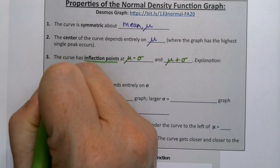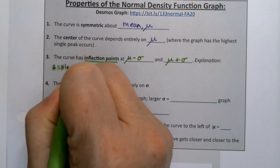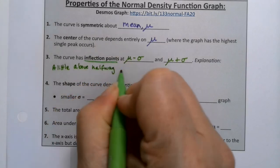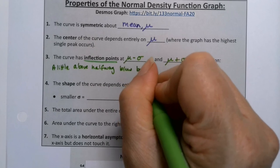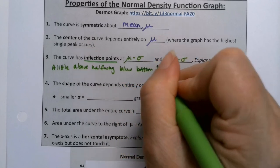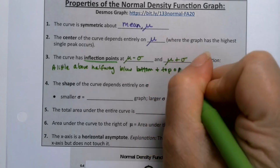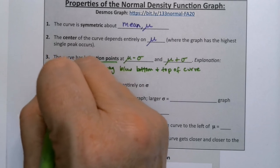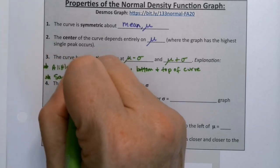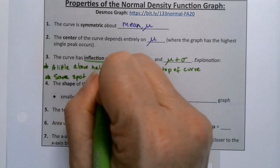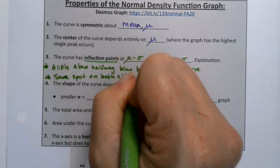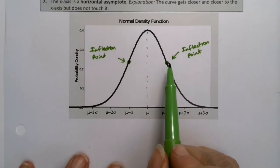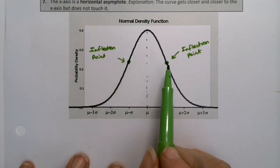And notice it has to be at the same spot on both sides because the graph is symmetric. Same spot on both sides. By that, I mean same distance over here as it is over here. Got to be the same distance.